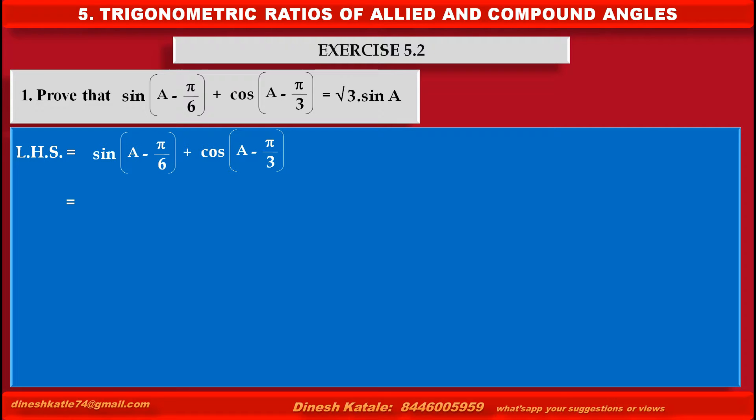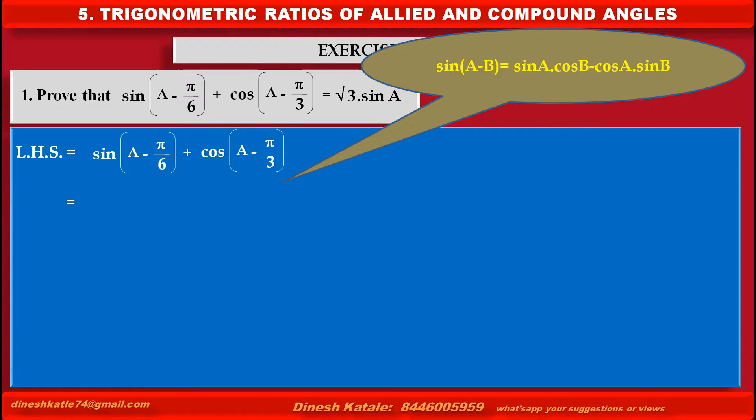Using the formula sin(A - B) = sin A cos B - cos A sin B,